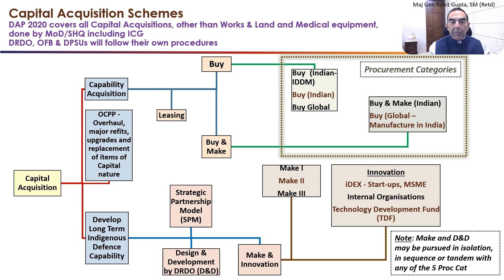The first is BUY, BUY & MAKE, and the third is LEASING, which is the new scheme introduced in DAP 2020. The BUY scheme is divided into BUY Indian IDDM — Indigenously Designed, Developed and Manufactured — BUY Indian, and BUY Global. The BUY & MAKE scheme is divided into BUY & MAKE Indian and BUY Global Manufacture in India. These five are called procurement categories, distinct from the procurement schemes of BUY and MAKE.